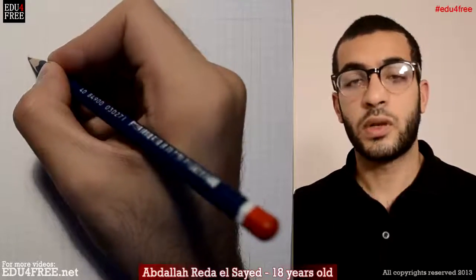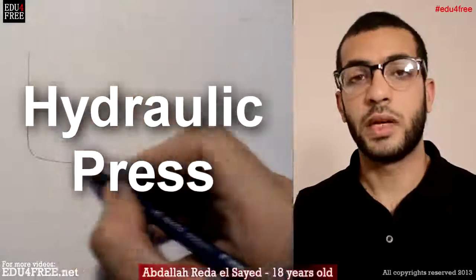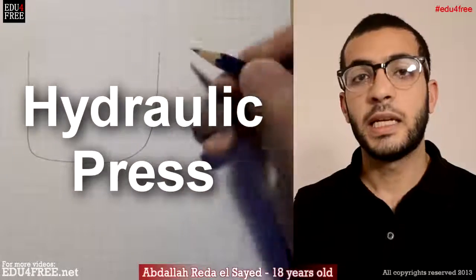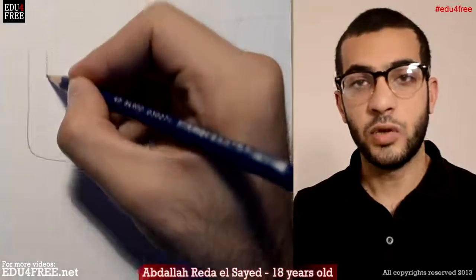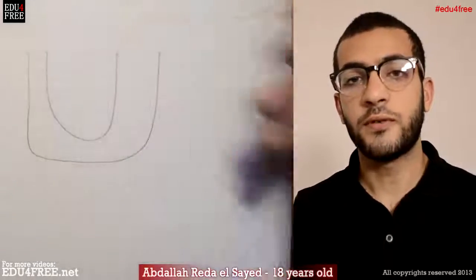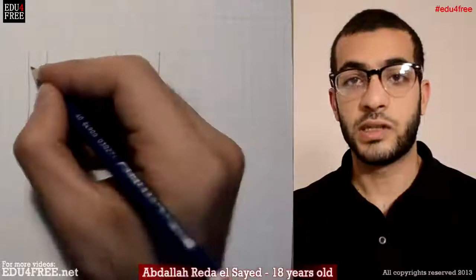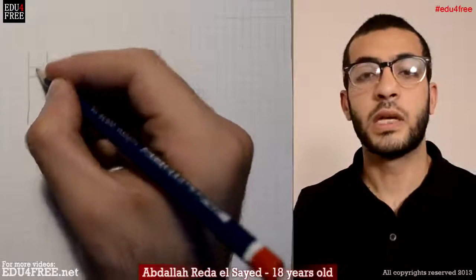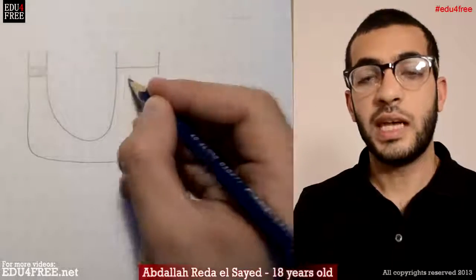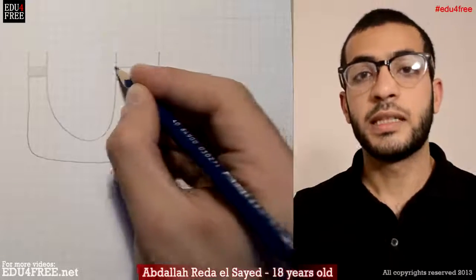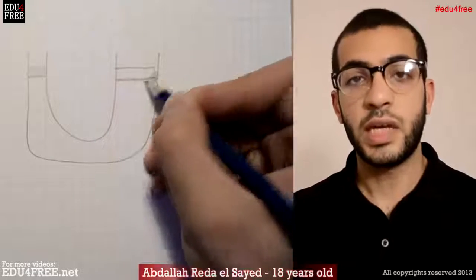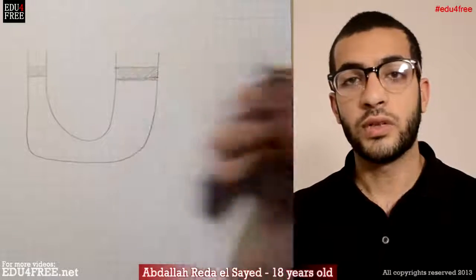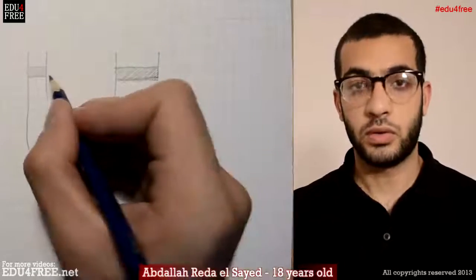Pascal's Principle is used for something really useful called the hydraulic press, which uses a U-tube in order to lift very heavy objects by using simple weights. What happens is there is a U-tube and inside this U-tube there is a liquid, and at both ends of the U-tube there are two pistons.